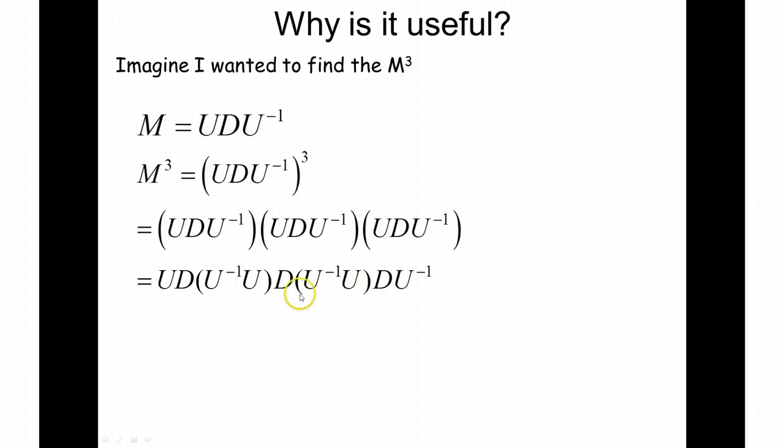And the same over here, and actually the identity matrix is a bit like the number one, I guess, and we don't need to write it in there anymore. So I'm going to have U, D, times D, times D, times by the inverse of U. And this D bit here is just going to be D cubed.